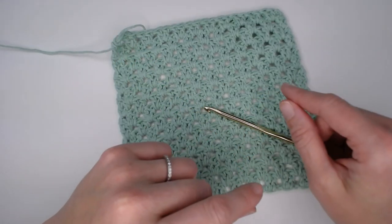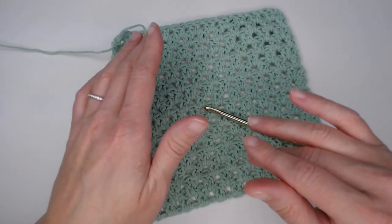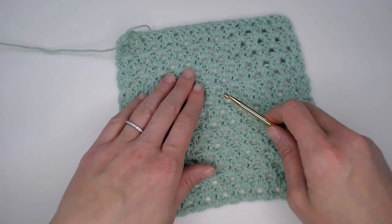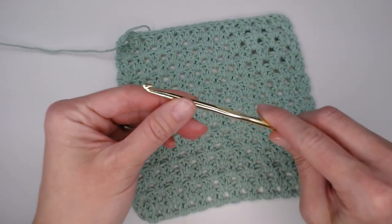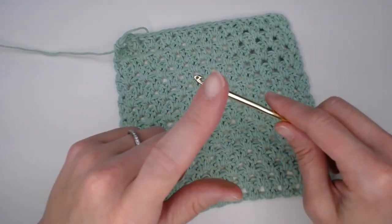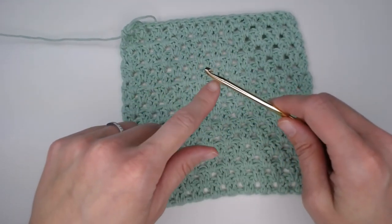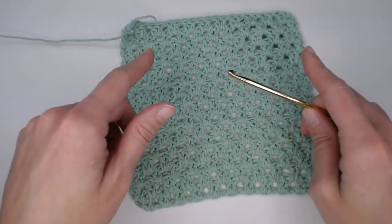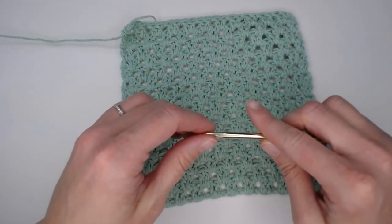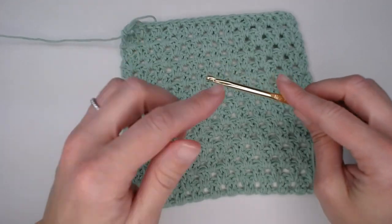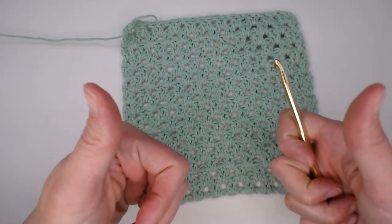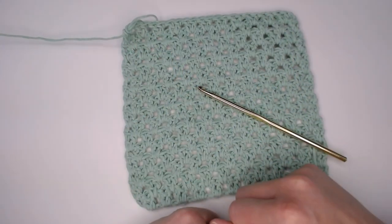I will also include at the end of this video a couple approximate foundation row chain counts that you can use, but I'm also going to specify with those chain counts what crochet hook I was using and what size yarn I was using. So that if you're using the exact same combination that I am, you can just go straight with that approximate chain count requirement for your blanket. Or, if you are going to use something different, just refer back to the chart and your measuring tape. Let's go ahead and get started with this pattern.